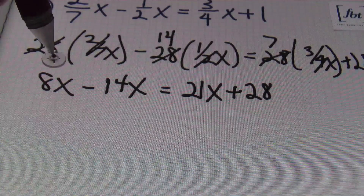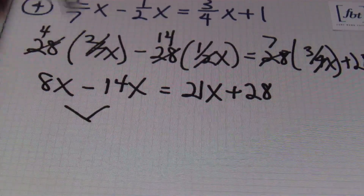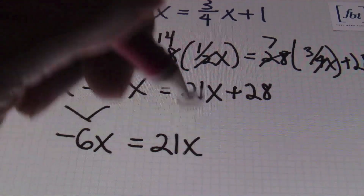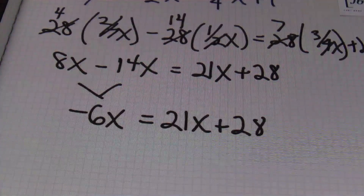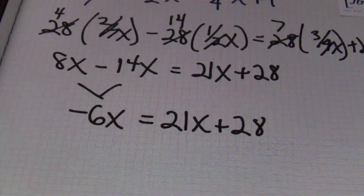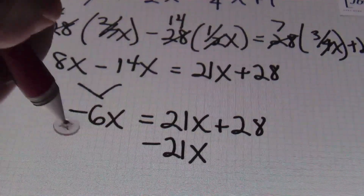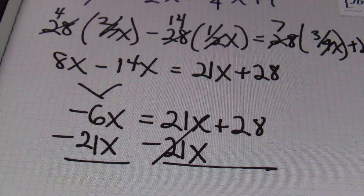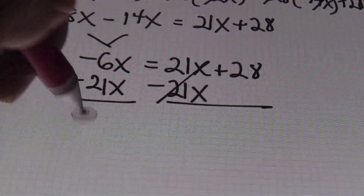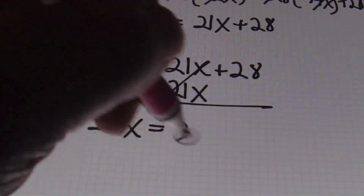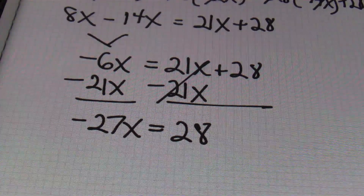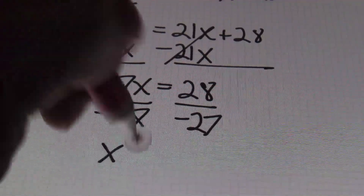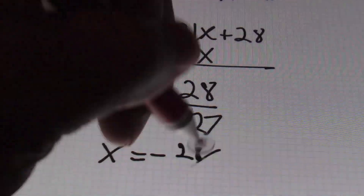On the left side, I have like terms I can combine: eight x minus 14x gives me negative six x, which equals 21x plus 28. I want to get all my variables on one side of the equal sign, so I'll subtract 21x from both sides. That gives me negative six x minus 21x, which combines to negative 27x, which equals 28. Then dividing both sides by negative 27, I'll have x equals negative 28 over 27.